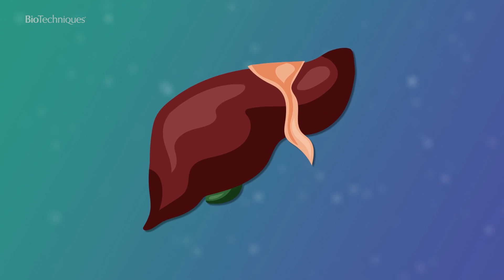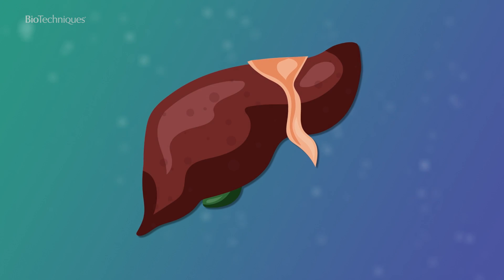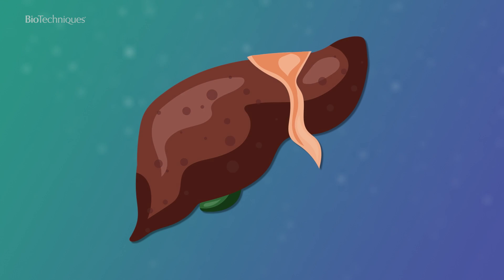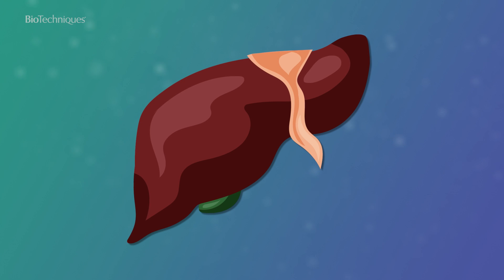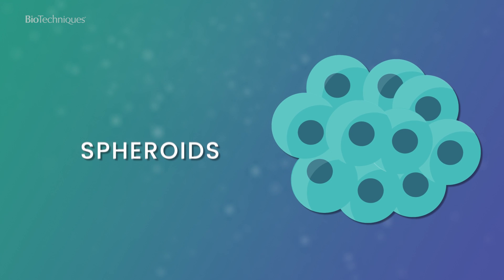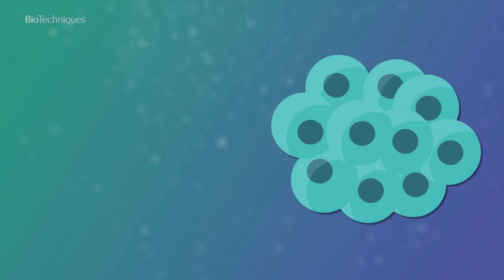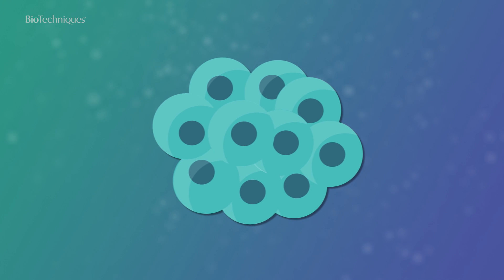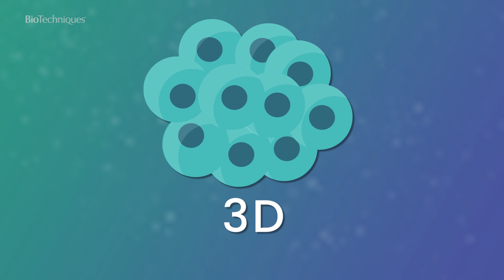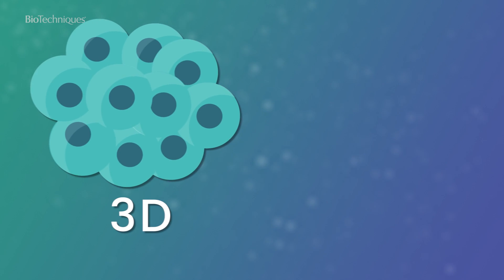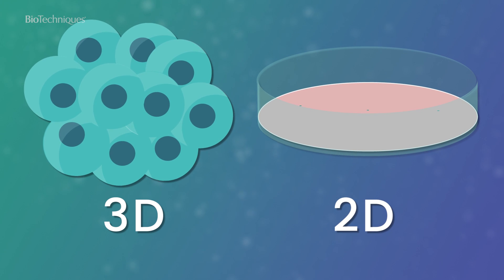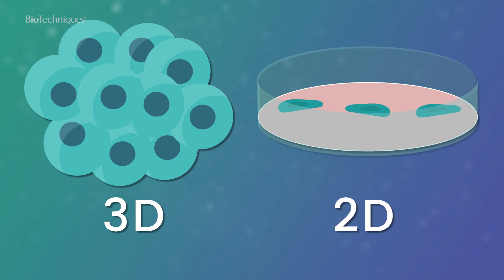Our understanding of the development of organs, the pathogenesis and progression of diseases, and the impact of therapeutics on tissues has advanced in recent years with the help of groundbreaking in vitro 3D cell culture models, including single and multicellular tumour spheroids and organoids. 3D cell culture models more closely resemble in vivo conditions and can therefore provide more physiologically relevant observations than 2D monolayer cell models, where cells are grown on non-biological surfaces.